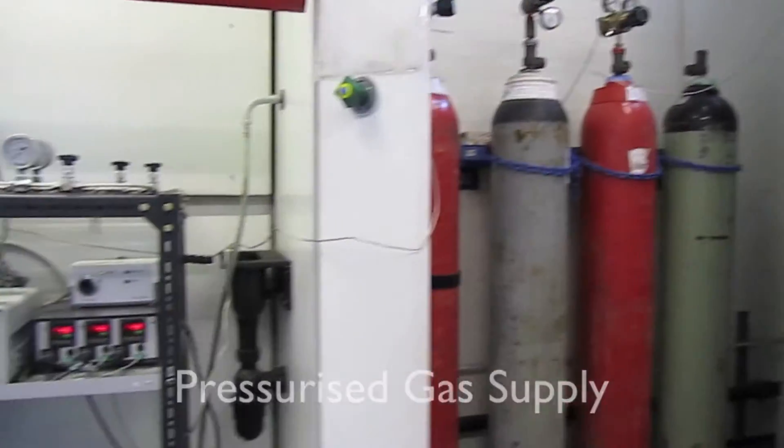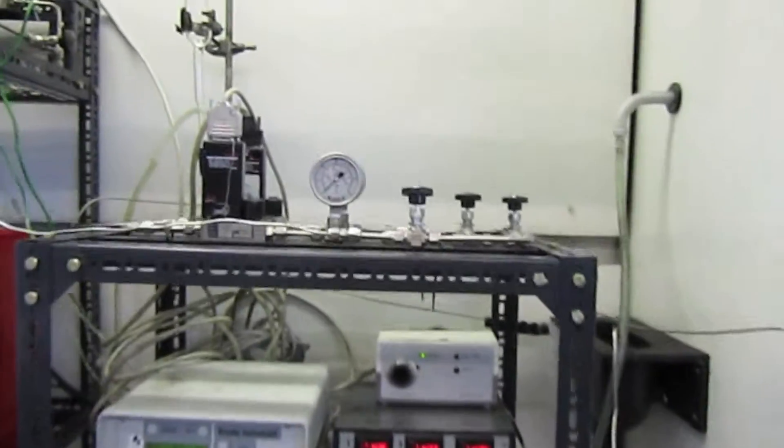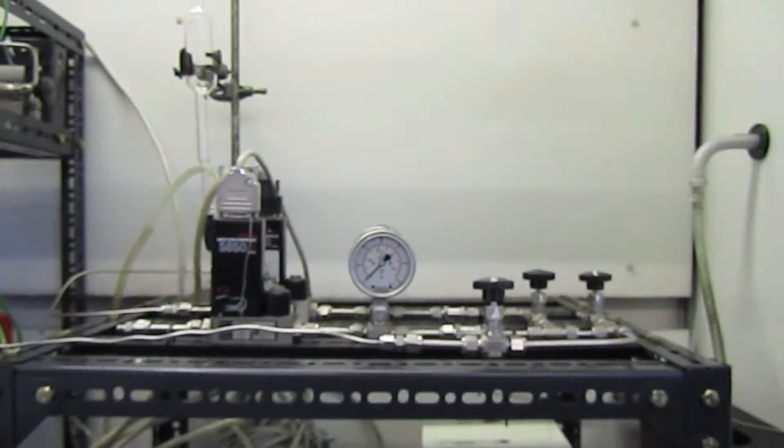The flow of gas is regulated by a mass flow controller which controls the flow in the range of 3 to 30 litres per hour.